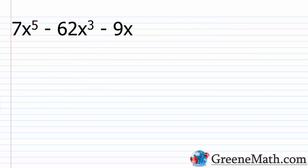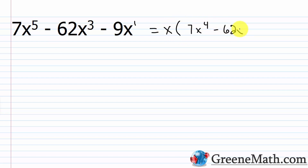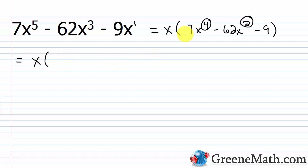Let's look at another example: 7x to the fifth minus 62x cubed minus 9x. You have a 5th power, a 3rd power, and a 1st power — not the normal pattern. But always ask yourself: can I pull something out first? Here I can pull out an x, giving x times the quantity 7x to the fourth minus 62x squared minus 9. Now this matches the format — the fourth power and the squared — so I rewrite it as x times 7 times x squared squared minus 62x squared minus 9.